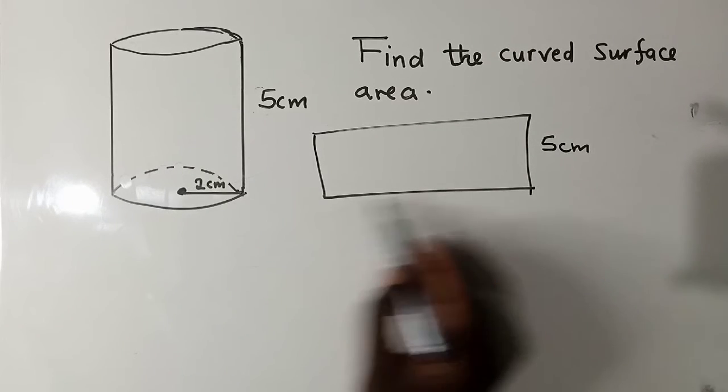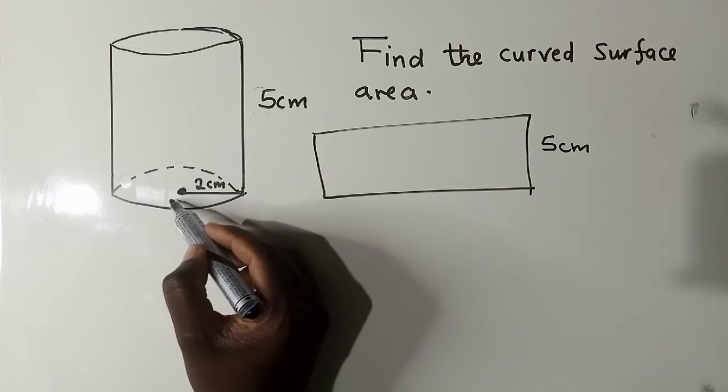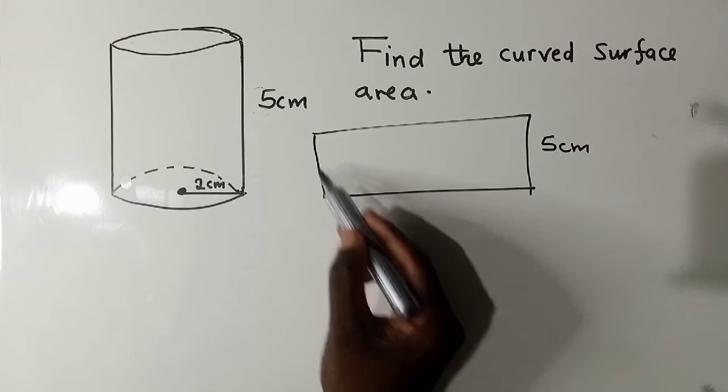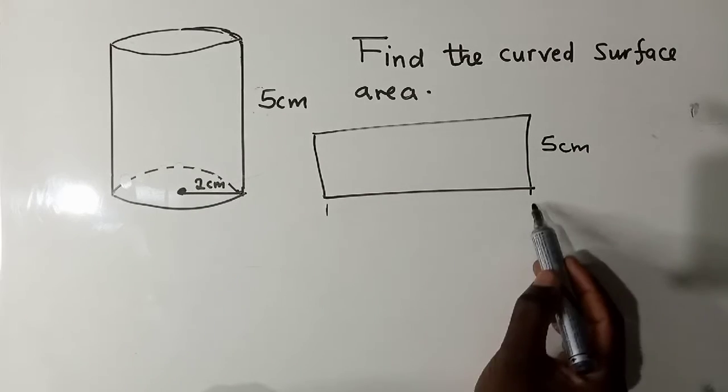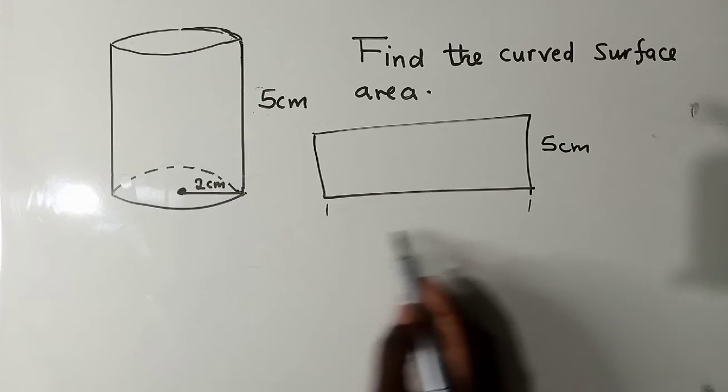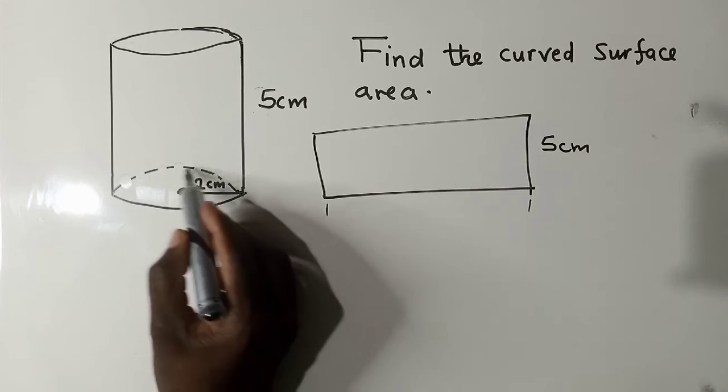Now because it's a base, it has been opened. So when you open this cylinder it will look like this. For you to know the length from here to here, you need to use the formula.